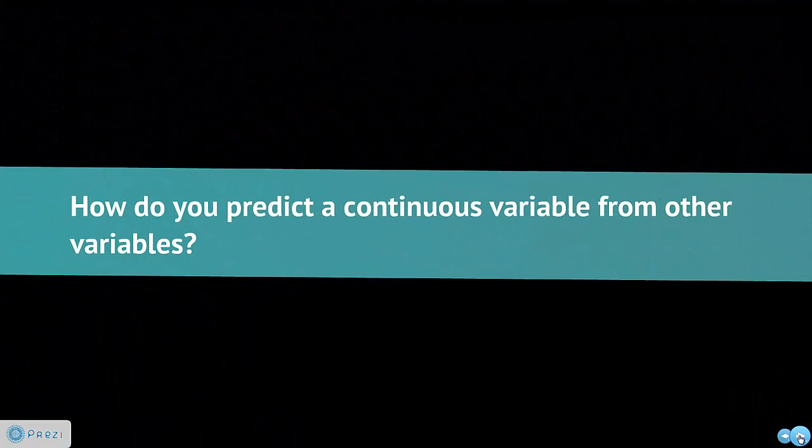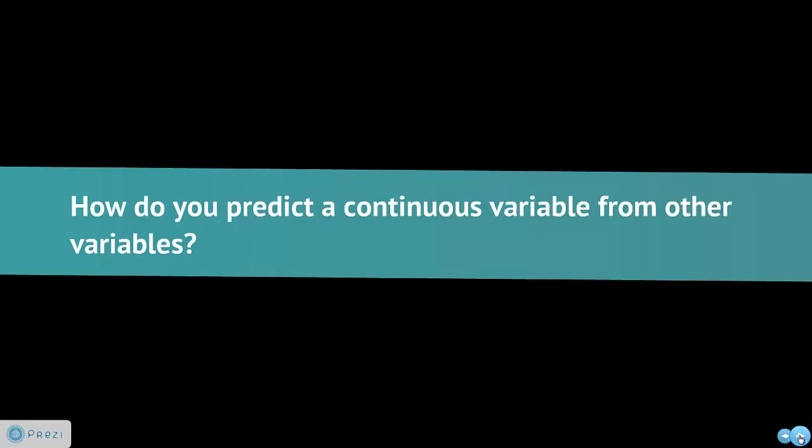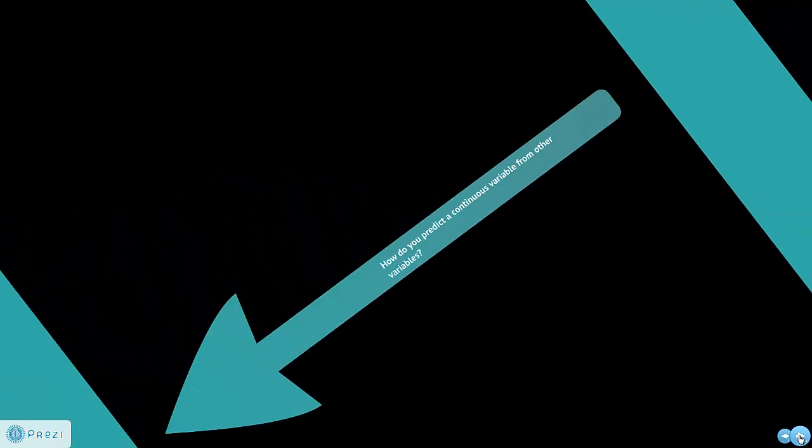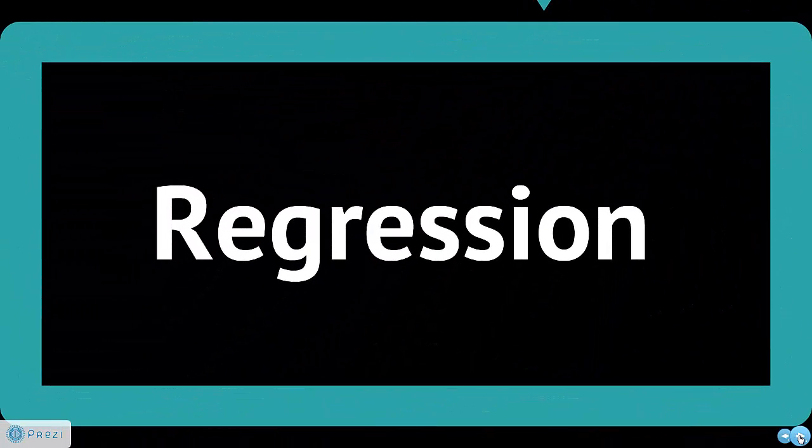Then we can go a bit further. Okay, so the two continuous variables are related. Can you predict the value of one continuous variable from another? Sure you can. And to find out how to do that, we're going to look at regression. And this is just going to be an introduction to regression. I actually teach an entire class on regression, so this is just going to be an intro.